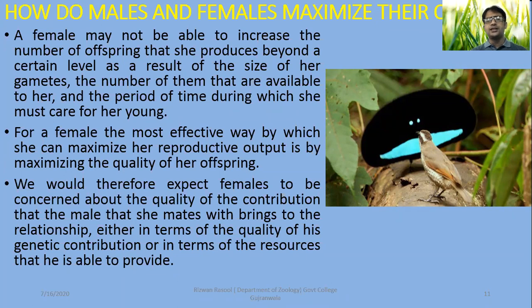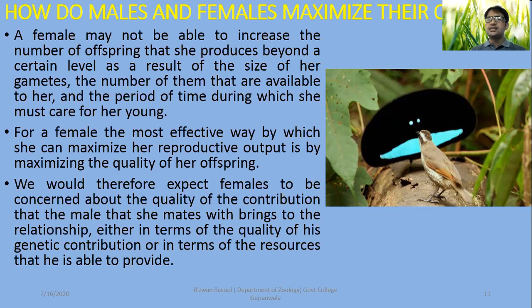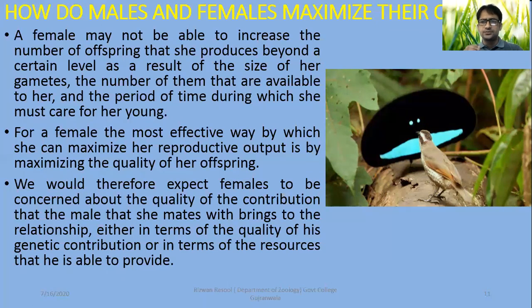For a female, the most effective way by which she can maximize her reproductive output is by maximizing the quality of her offspring — that is, by gaining better genes. That is why, through sexual selection, females will select the male having the best properties so that she may get better genes for the next generation.